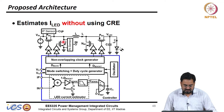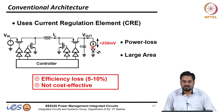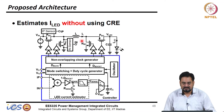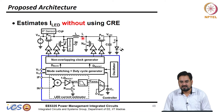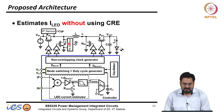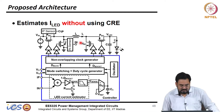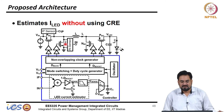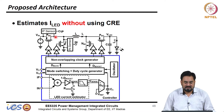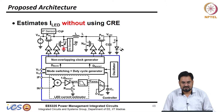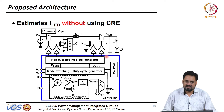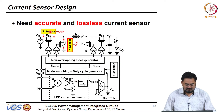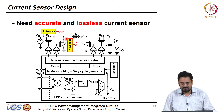What we can do instead of having this extra current source is to simply sense the current going into the inductor. We know that in the case of boost the inductor current is I_load over (1 minus d), and in the case of buck the inductor current is the same as I_load. If I can sense the inductor current then I can regulate the load current as well. All we need to do is sense the inductor current, which can be easily done by sensing the current in the high-side and low-side MOSFETs.